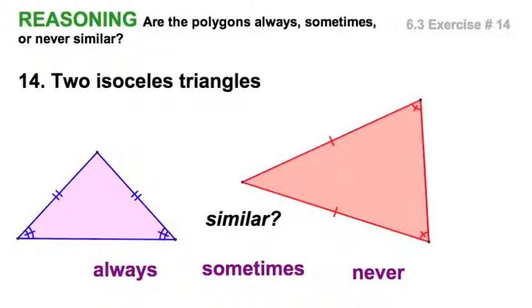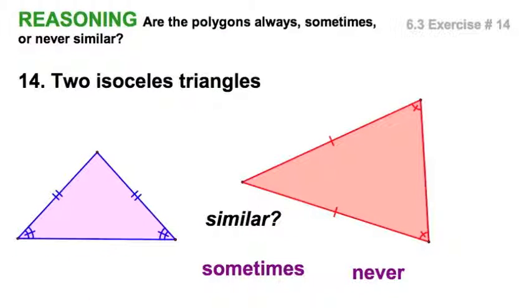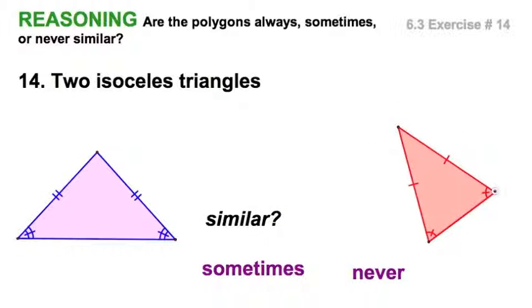Well, are two isosceles triangles similar? I guess looking at these two, I'm going to throw this one out right away, the always. Not a chance. Well, let's have a look, see if we can make that sometimes.